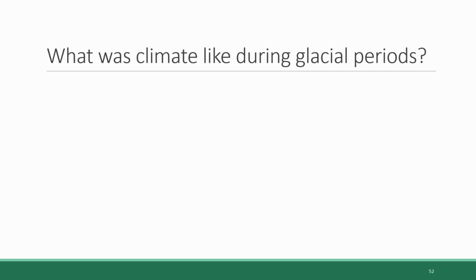We left off looking at the types of evidence that we rely on to draw conclusions about the Earth's climate in past historical periods. In this section we're going to take a look at why the quaternary has oscillated between glacial and interglacial periods. But first let's talk briefly about what Earth's climate was like during glacial periods. We're in an interglacial period right now, but what were the glacial periods like?